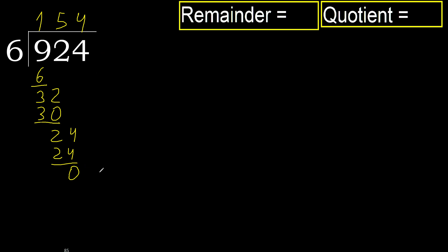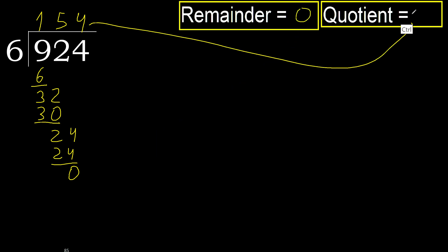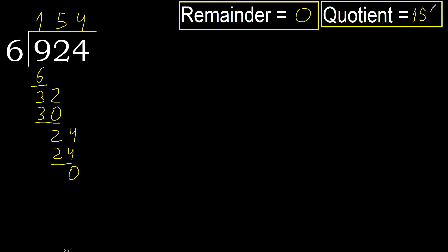There is no next number, therefore finish it. 0 remainder. Therefore 924 divided by 6 is 154.